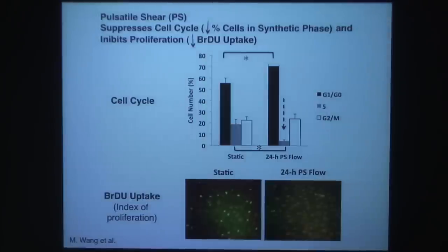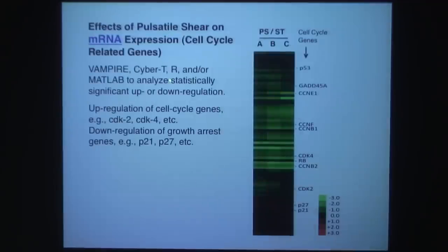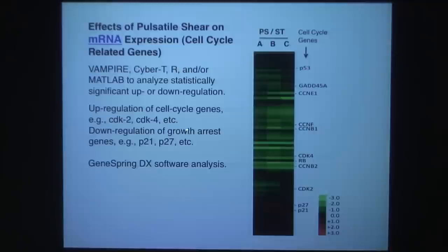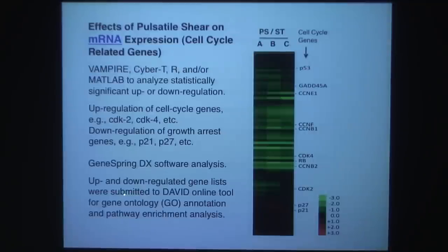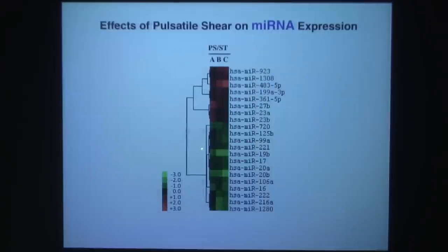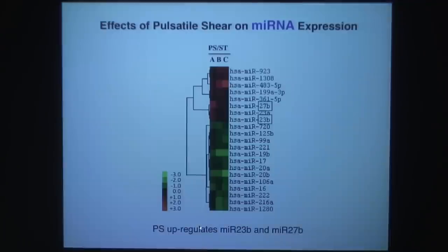Together with this, we see changes in cell cycle-related mRNA: CDK2 and CDK4 are downregulated, while growth arrest genes are upregulated with pulsatile flow. Results can be subjected to GO annotation and pathway analysis. Regarding microRNAs, miR-23b and miR-27b are known to be related to the cell cycle, and pulsatile shear upregulates both of these genes consistently across three different experiments.